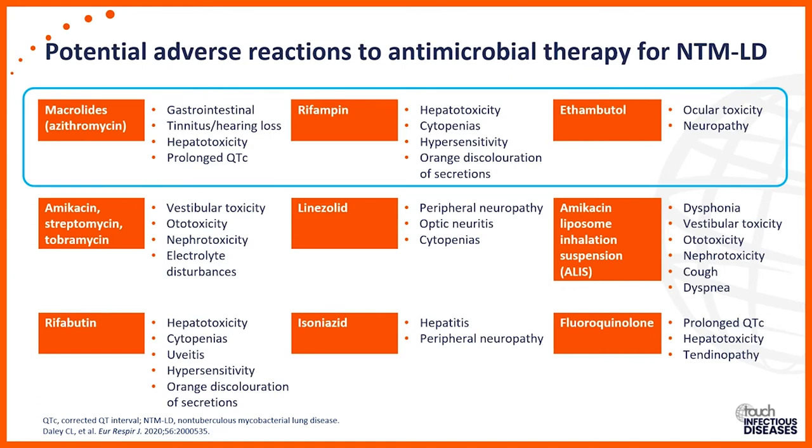Ethambutol — it's very important to discuss with your patients the issue of potential vision loss. It can cause inflammation of the optic nerve, and the risk is probably age-related and dose-related. For rifampin or any rifamycin, the main issue is drug-drug interactions, and it's very important to look through the patient's medications for issues such as hypertension and hyperlipidemia, and to manage those interactions up front.